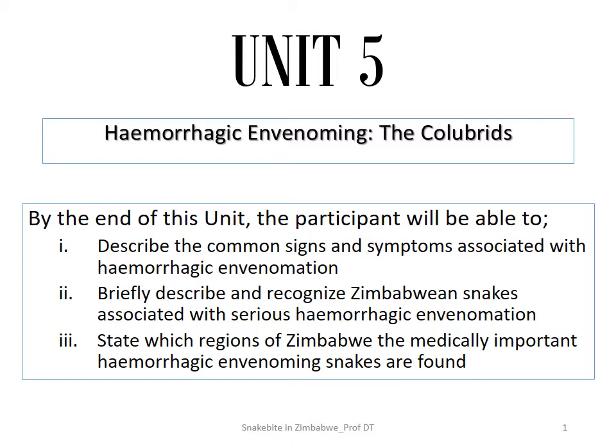By the end of this unit, which is a pretty short one, the participant will be able to describe the common signs and symptoms associated with hemorrhagic envenomation. Also be able to briefly describe and recognize Zimbabwean snakes which are associated with serious hemorrhagic envenomation. I chose the word 'serious' because some of the cytotoxic snakes do have some mild hemorrhagic symptoms at the bite site, but the more serious ones are as a result of the colubrids.